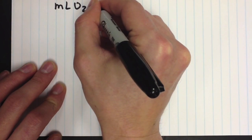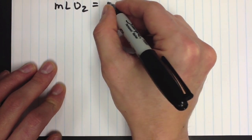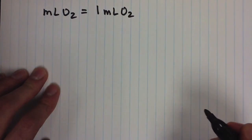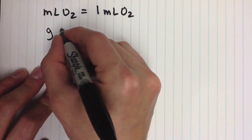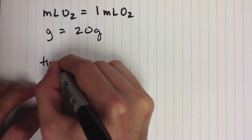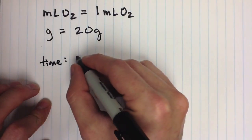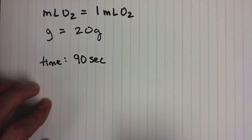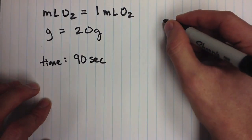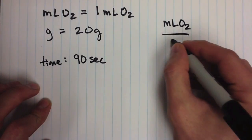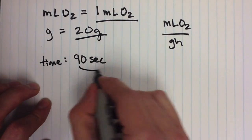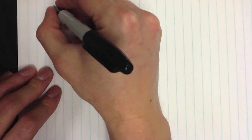Suppose that I observed a mouse that inhaled one milliliter of oxygen, with a mass of 20 grams, and the time it took this mouse to inhale one milliliter of oxygen was 90 seconds. Note that the volume and mass are already in the correct units — milliliters and grams — since we're targeting milliliters of oxygen per gram hour. But we need to first convert the seconds to hours.